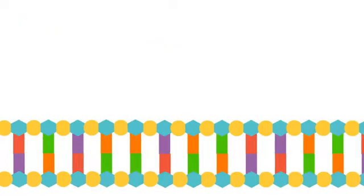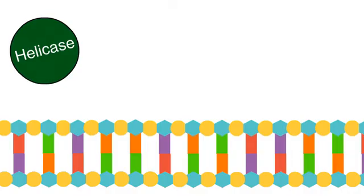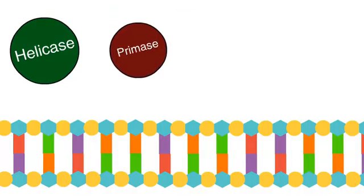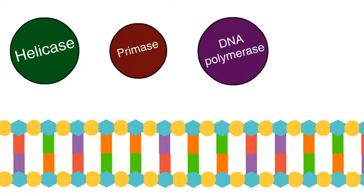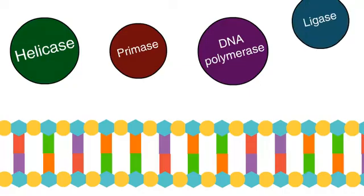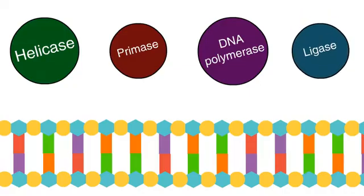To recap, helicase unzips the DNA separating the strands. Primase adds RNA to start the synthesis of the new strand. DNA polymerase adds the nucleotides to make the new strand. And finally, ligase fills in the gaps.